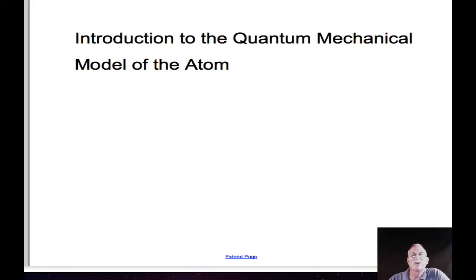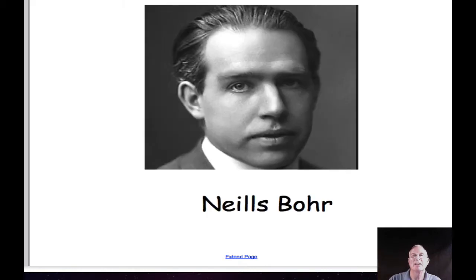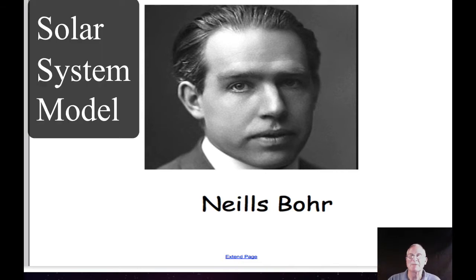Welcome to the introduction to the quantum mechanical model of the atom. I want to warn you before we start that many parts of this model will seem really offbeat and bizarre, but remember that this is a model based on mathematical formulas that has proven to be pretty accurate in describing the behavior of atoms. The quantum mechanical model came about after Niels Bohr's solar system model, as experimentation proved that his model wasn't sufficient to explain the behavior of atoms more complex than hydrogen.